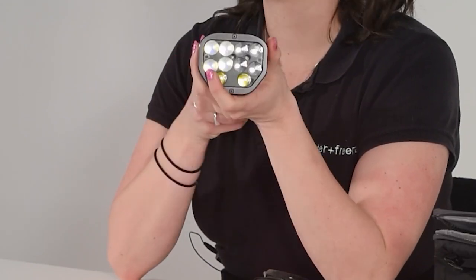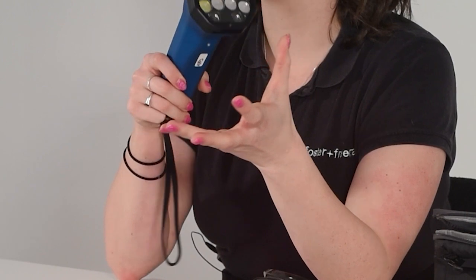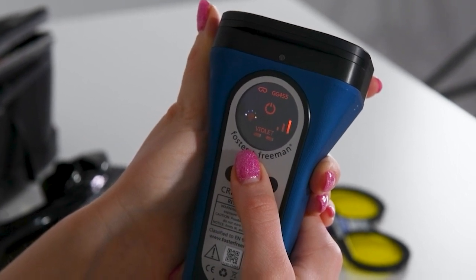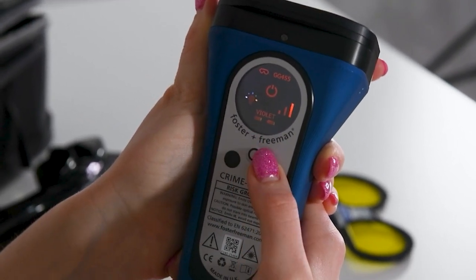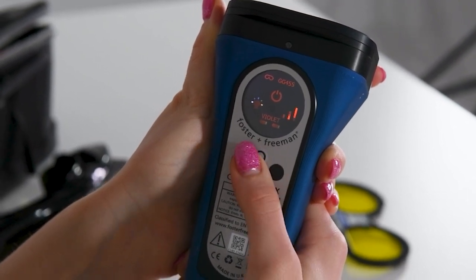Having those five light sources within one handheld unit means that the examiner can quickly switch between these light sources. When switching between light sources, the Crimelight will alert the user to which goggles should be used alongside that light source.